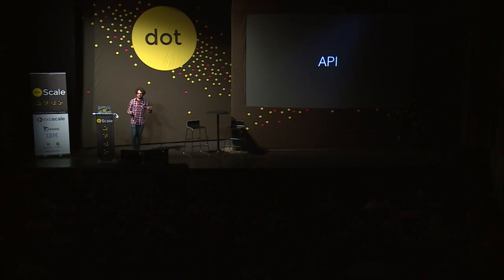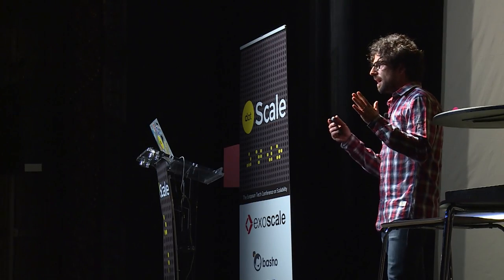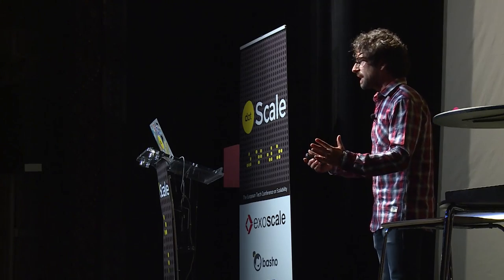Disque's API is completely agnostic about what a message is. It can be a little piece of text, maybe a JPEG of a dog running — anything is okay. It's a binary blob. It can be large, small, whatever you want.